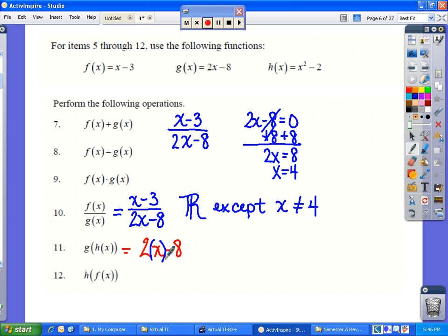and that's what's going to get replaced by h of x. So I'm going to rewrite it as 2 times x squared minus 2 minus 8. Go ahead and do the distribution of the 2 across the x squared minus 2. We get 2x squared minus 4 minus 8. Combining those two constants, 2x squared minus 12 would be our final answer.